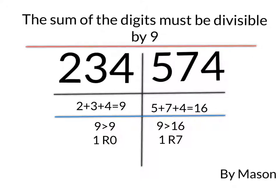But 574, you add all those numbers together, that equals 16. 9 goes into 16 one time with 7 remainders and that means it is not divisible by 9.